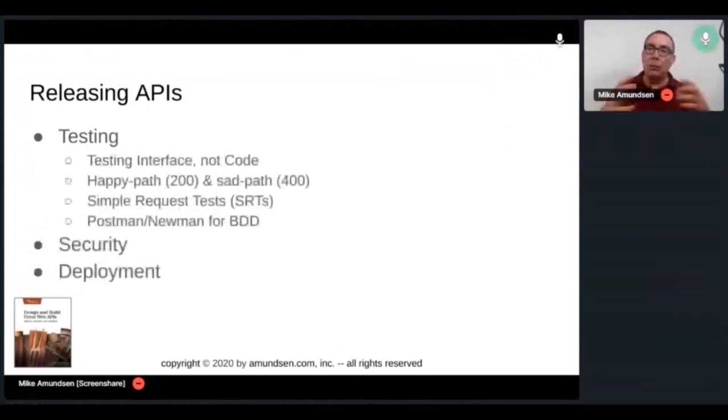Be sure to test both happy paths, which you expect to return 200, and sad paths, which return 400s. I shouldn't be able to save a record if it's missing a field. I shouldn't be able to write a field with an invalid value. I shouldn't be able to approve this if the record's missing something from some other action. So I've got to test both the happy and the sad. I use a thing called simple request testing, which is literally using curl. I write up a bunch of curl messages into a small script, and I can run that in one step just like that. I can run SRTs in milliseconds. So very often, that's my proof for build before I do a build or a check-in.